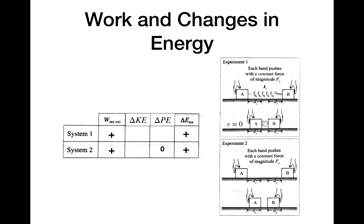Since the change in total energy is positive and the change in potential energy is zero for system two, the change in kinetic energy must be positive — the blocks would still be moving at the end. For experiment one, we were given that the blocks have zero velocity after being pushed, so the change in kinetic energy is zero. Since the total change in energy is positive, there must be a positive change in potential energy.